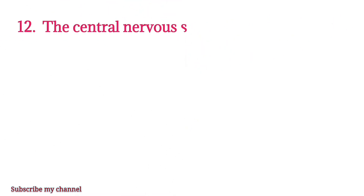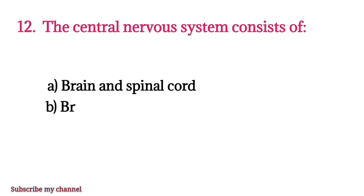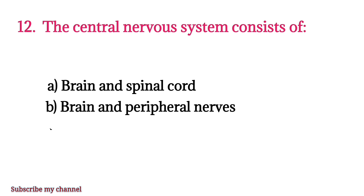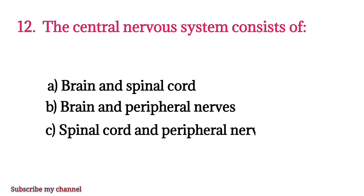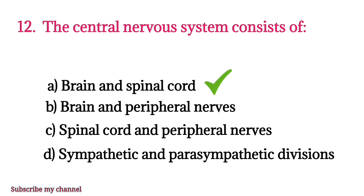MCQ number twelve: The central nervous system consists of — option A: brain and spinal cord, option B: brain and peripheral nerves, option C: spinal cord and peripheral nerves, option D: sympathetic and parasympathetic division. The right option is option A.